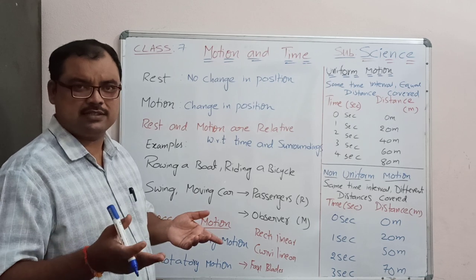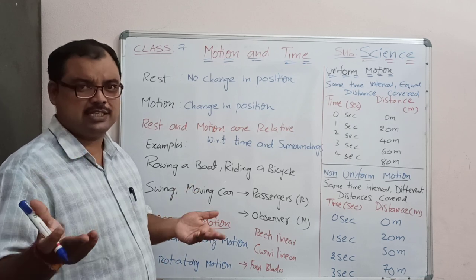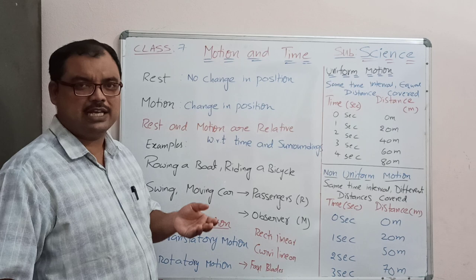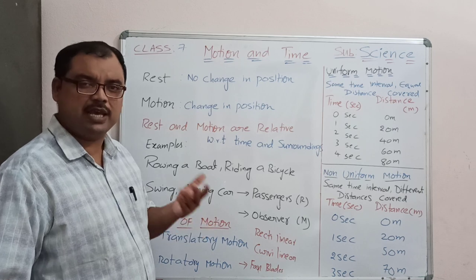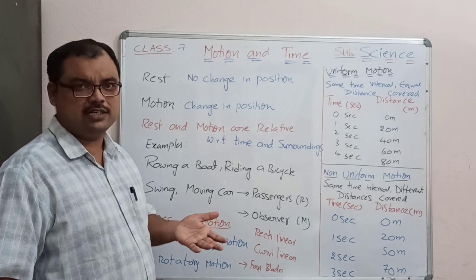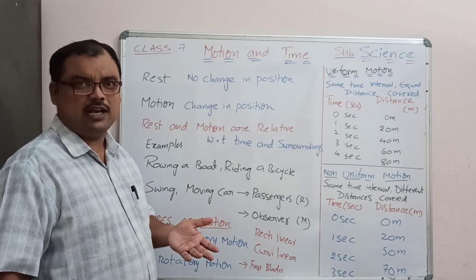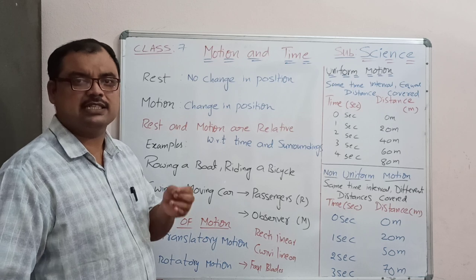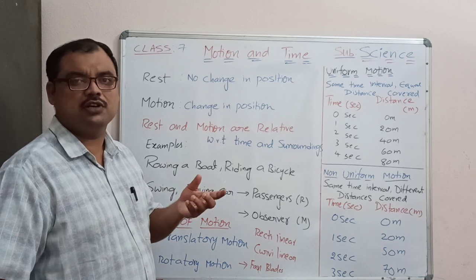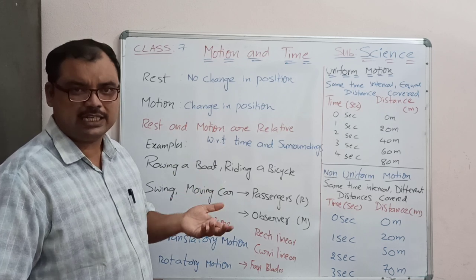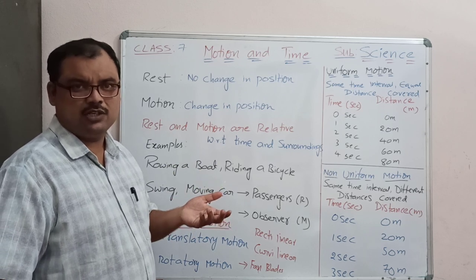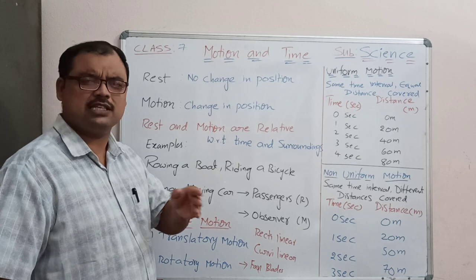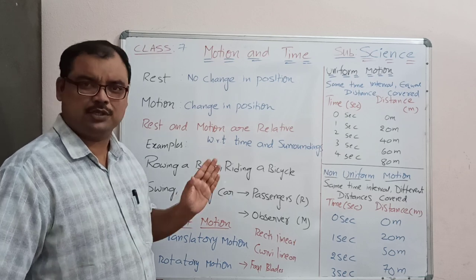Where we use acids? Where we use bases? Where we use salts? What are the properties of acids, bases, salts? How can we know a given substance is acid, base or salt using indicators? Characteristics of acids, bases, salts and uses — everything was over.